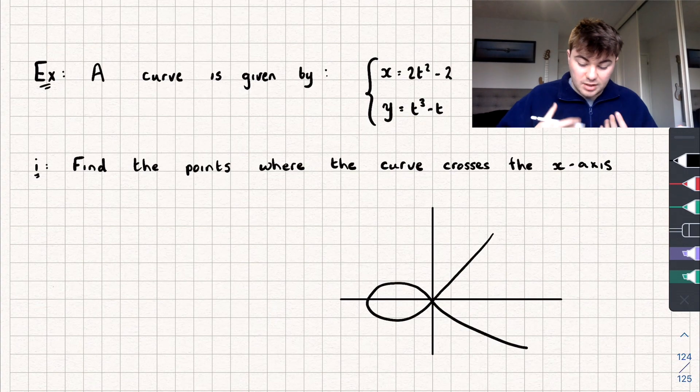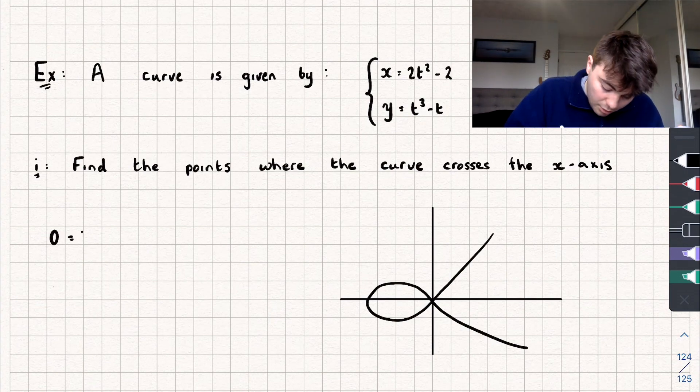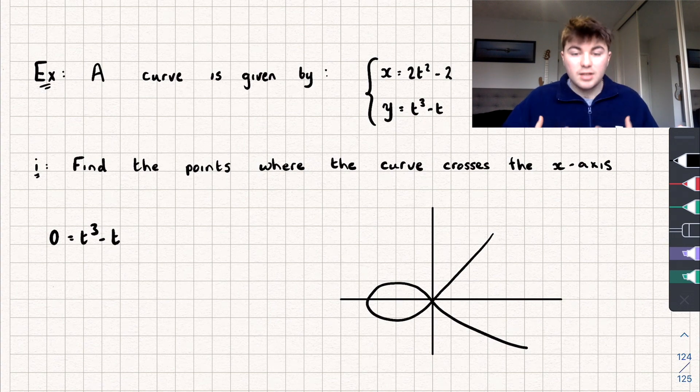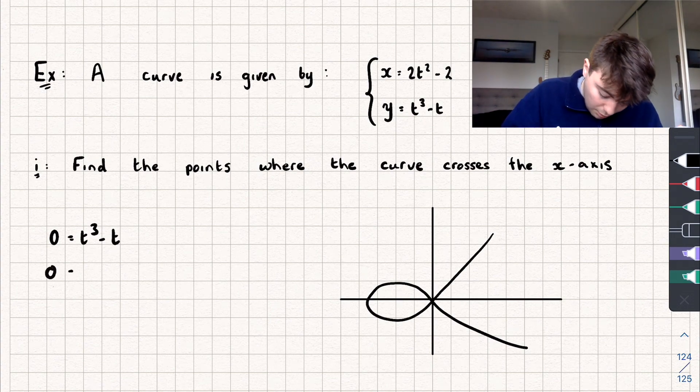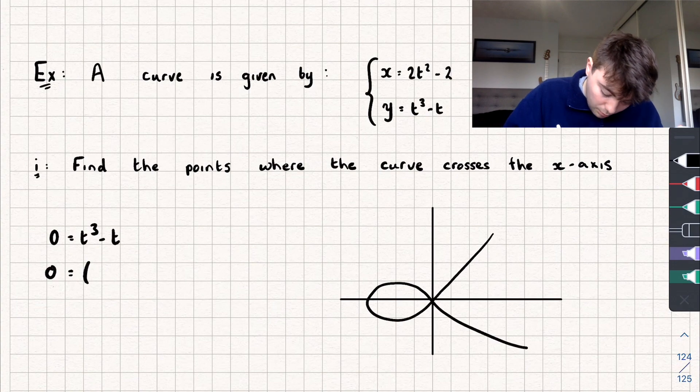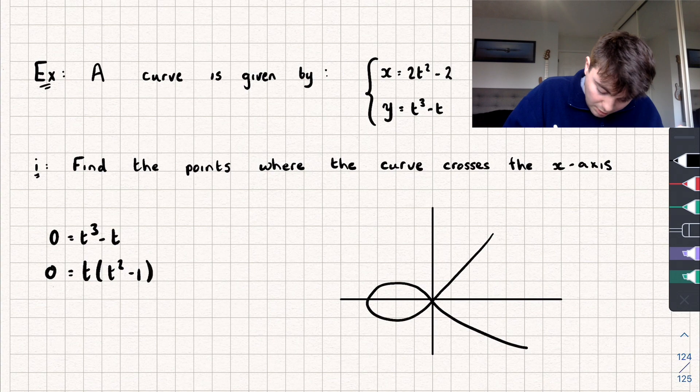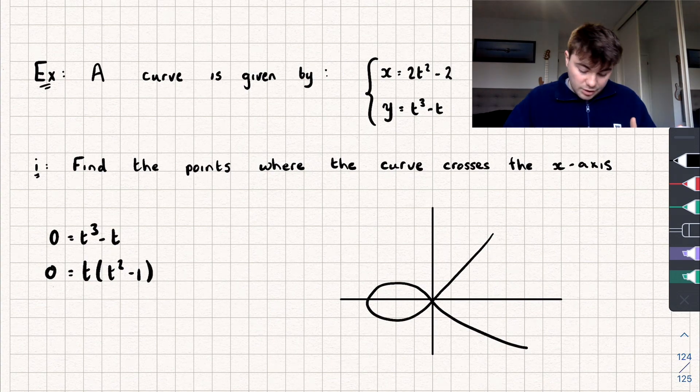Well, the curve is going to cross the x-axis when y equals 0, so let's substitute that in. When y equals 0, we have 0 equals t cubed minus t. Now let's factorize this and solve to find values of t. We get 0 equals, well we can pull out a factor of t, and we've got t multiplied by t squared minus 1.